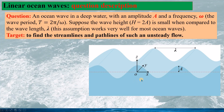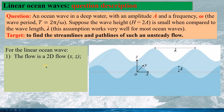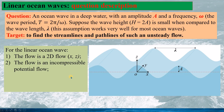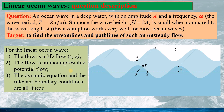This is the drawing of the ocean wave and the coordinate we are going to use for studying it. For this ocean wave, the flow can be considered as a 2D flow in x and z directions. The flow is an incompressible potential flow, and the dynamic equation and the relevant boundary conditions are all linear. As such, the wave can be mathematically solved and analyzed.